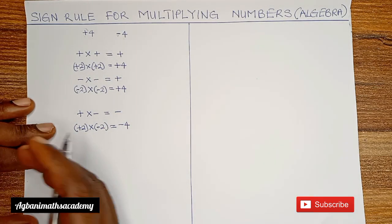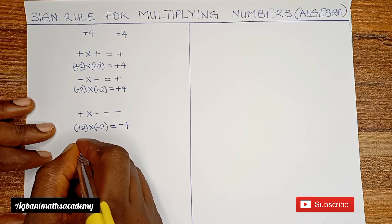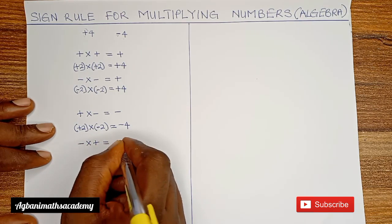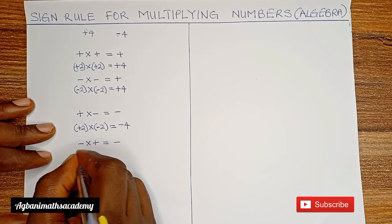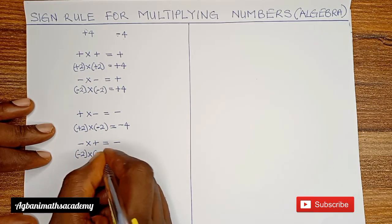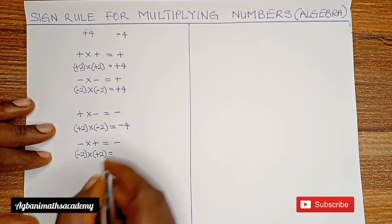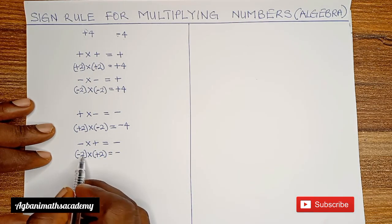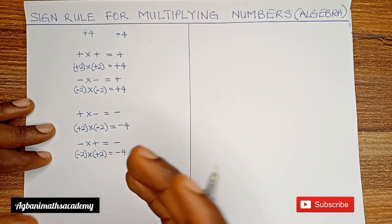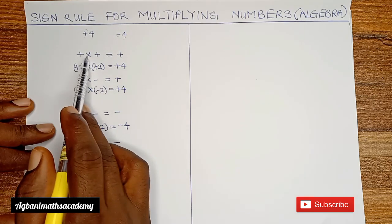Let's look at a situation where we have a negative number multiplying a positive number. Minus multiplied by plus gives a negative answer. For example, minus 2 multiplied by plus 2: we multiply the signs first — minus multiplied by plus gives us minus — and 2 multiplied by 2 gives us 4.